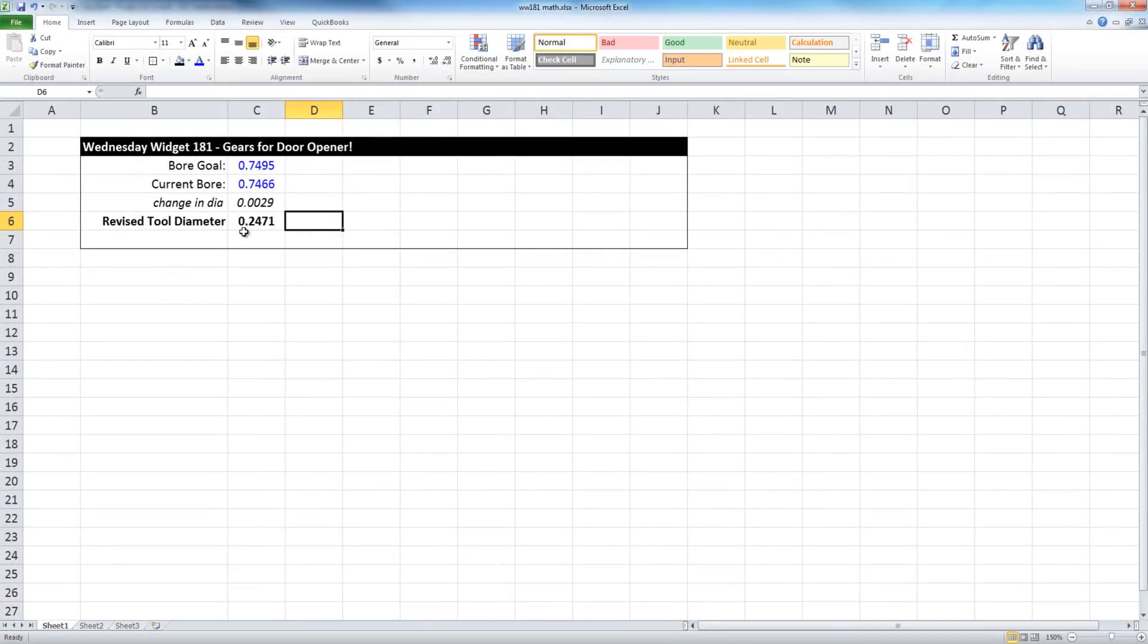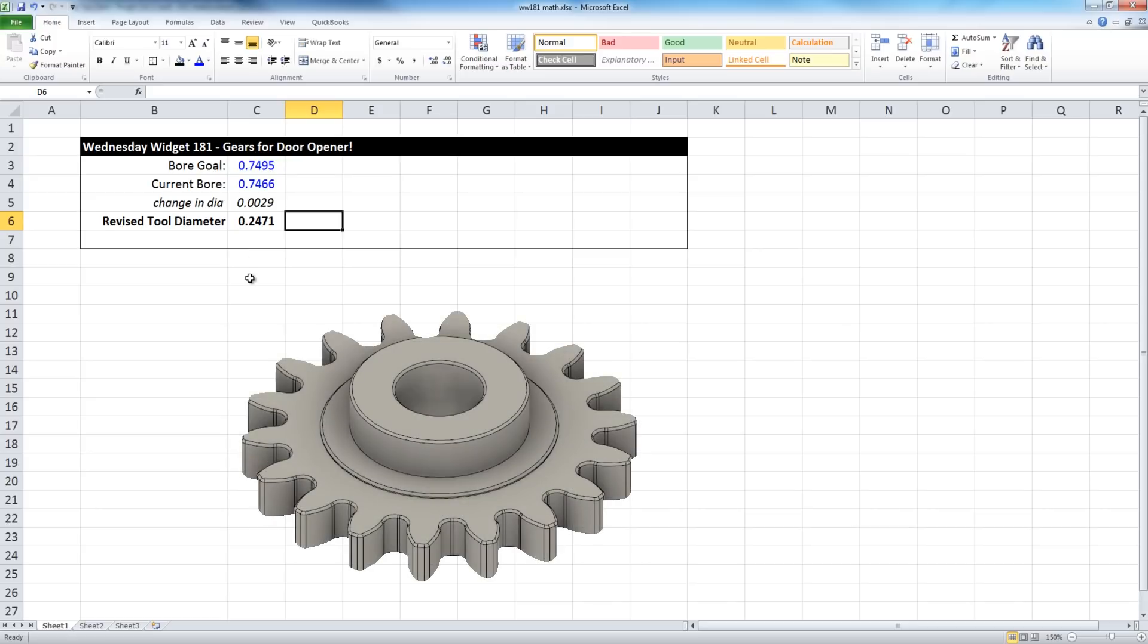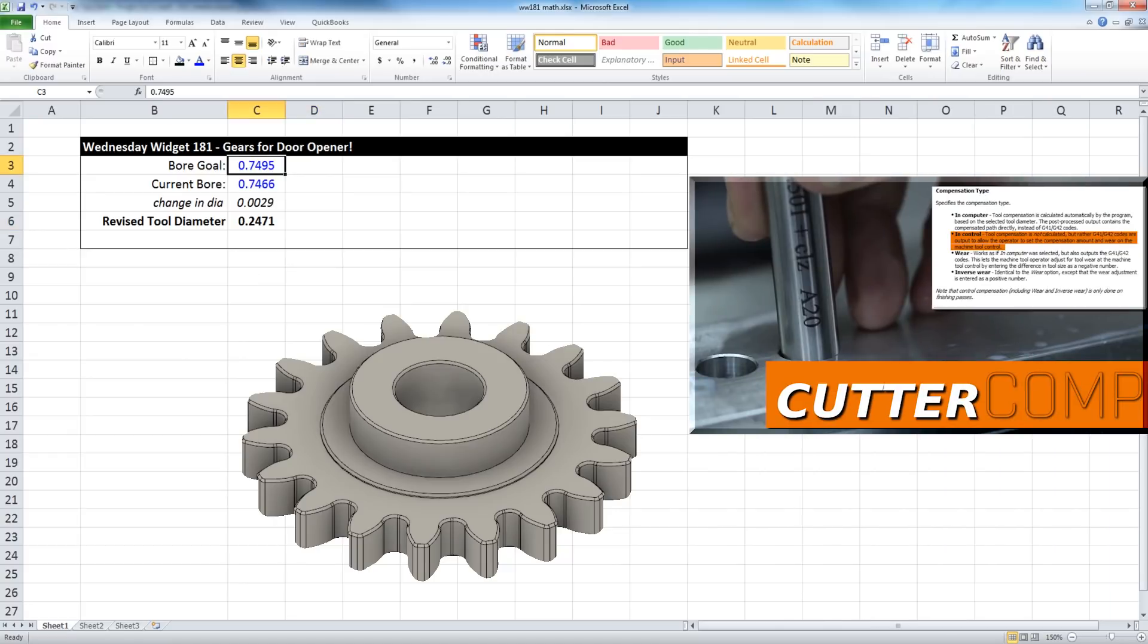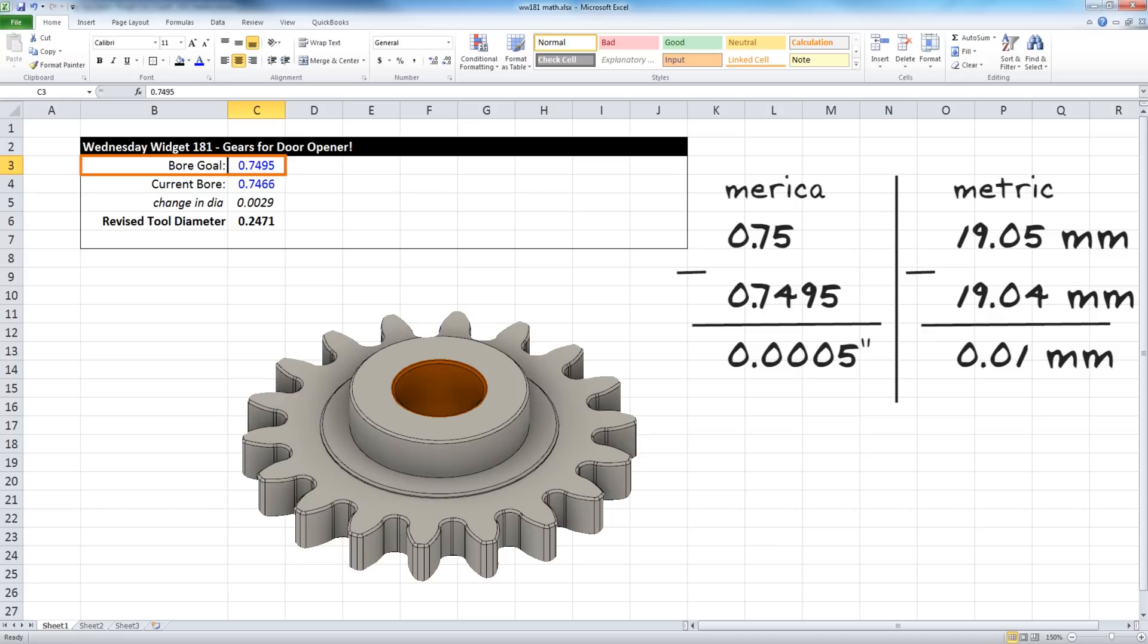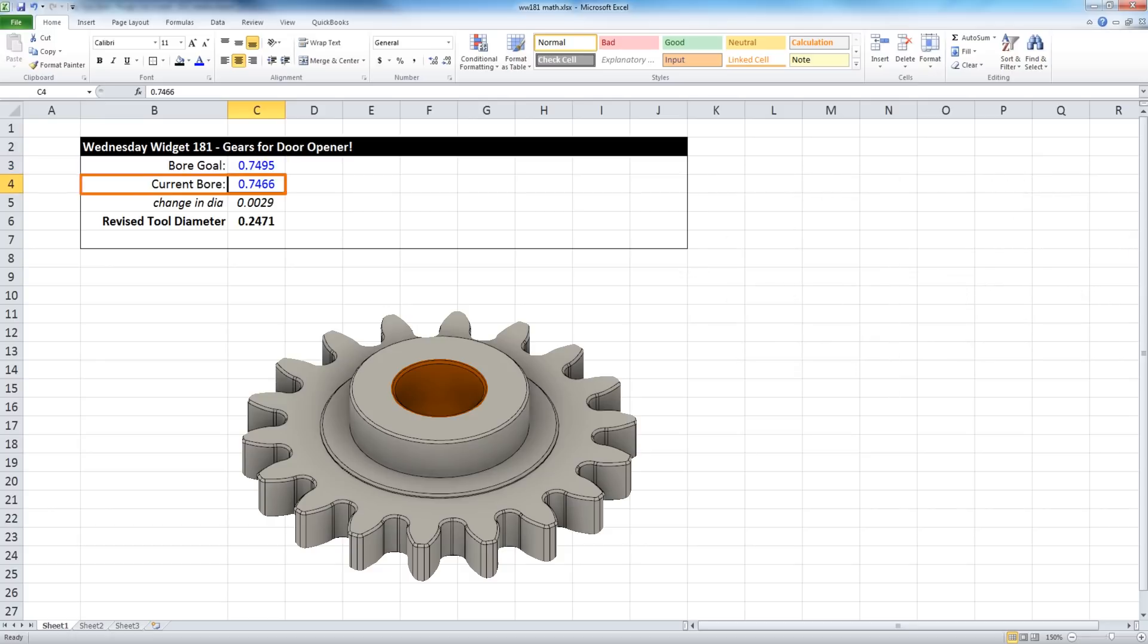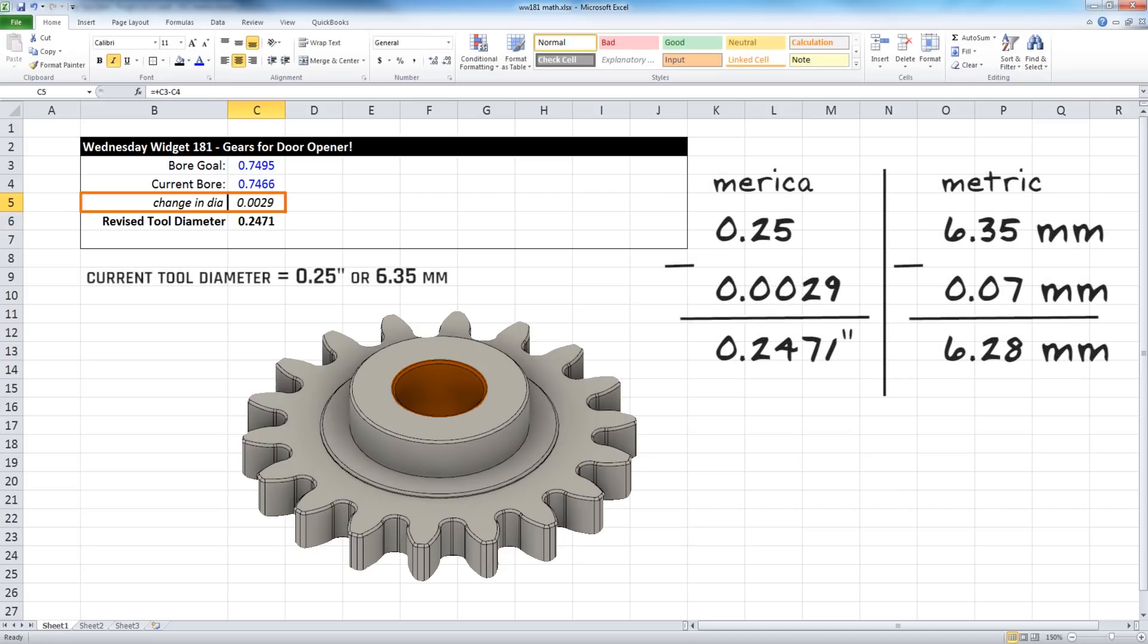So I just put 0.2741 in as the tool diameter. How did we get to that mat? Well, we're using cutter comp coming back to last week's Wednesday widget. We know we want our bore to be about half a thou or about 0.012 millimeters under 0.75 inches. If our current bore that we're measuring is about 0.7466, that means we need to change our tool diameter by that amount. And if our tool diameter was currently 0.25, we're going to back out that change and we're going to enter 0.2471 and use cutter comp to avoid having to go back to cam to make that change.